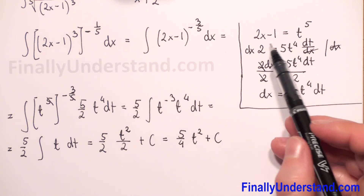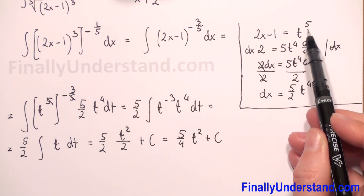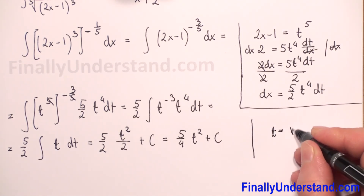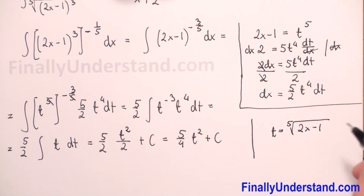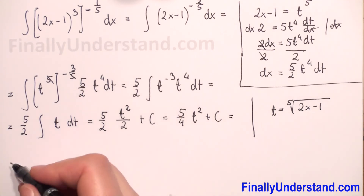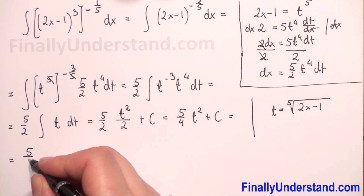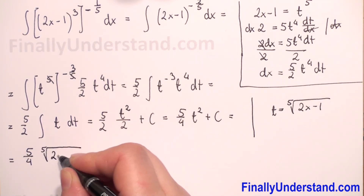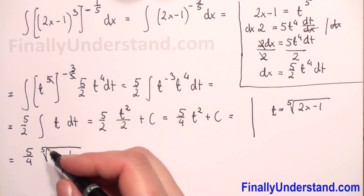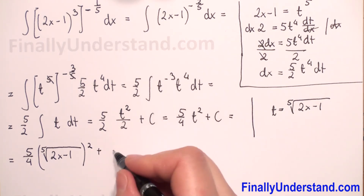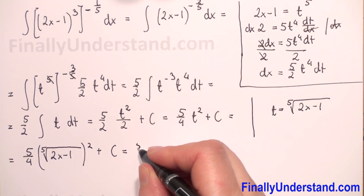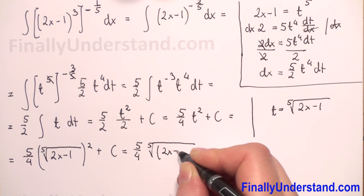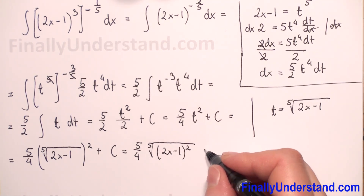Now we return to our substitution. We have that 2x minus 1 equals t to the 5th power, which means t equals the 5th root of (2x minus 1). Substituting back, we get 5 over 4 times the 5th root of (2x minus 1), squared, plus constant C. We can also write this as 5 over 4 times the 5th root of (2x minus 1) to the 2nd power, plus constant C.